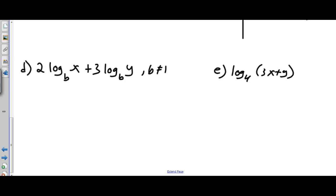So we have to use the power rule to rewrite this as log base B of x to the power of 2 plus log base B of y cubed. Now we can use our product rule because we're taking the sum of two logarithms with the same base, that means we can write this as log base B of x squared y cubed.